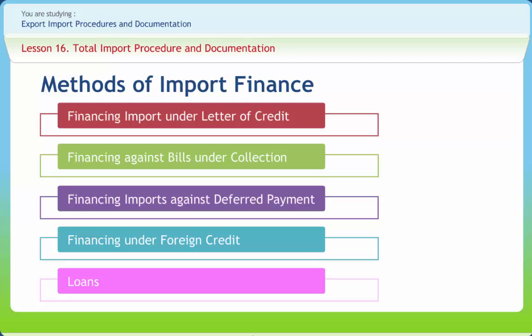The Government of India gets assistance in the form of loans and development credits from international financial institutions as well as foreign governments. These loans are of two types: tied loans and loans in free foreign currencies. Terms and conditions of each loan, along with detailed instructions regarding the procedure for opening letters of credit, submission of documents, etc., are specified. RBI also issues circulars for each foreign credit giving important instructions relating to such imports.